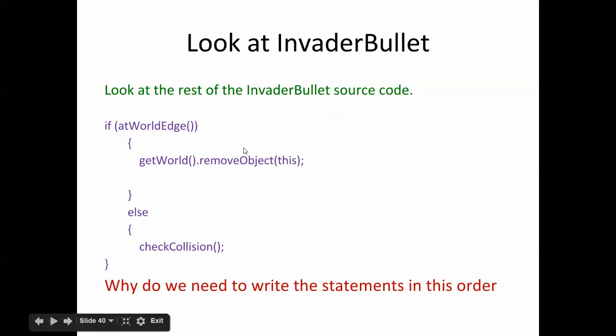Okay, now let's look at the bullet. I want to just explain this too. Look, notice the if statement. If you're at the edge of the world, then remove the bullet. Otherwise, do this. If we didn't do this, this would cause trouble. Answer this: Why do we need to write the statement in this order?